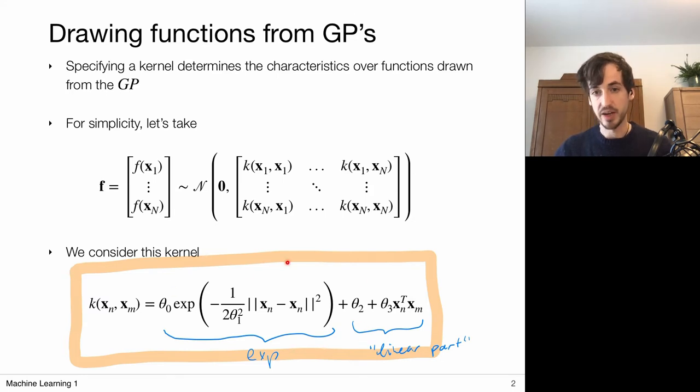We have this kernel of this particular exponential form, and it has these four parameters. It has theta zero, which amplifies this exponential. We have theta one, which scales the distance between point pairs—xn minus xm. Then we have a theta two term, which is like a global offset in this kernel, and this linear term weighted with theta three. What I'm going to do in the remaining slides is explore the influence or effect of choosing a particular theta, and see what kind of functions roll out of this Gaussian process.